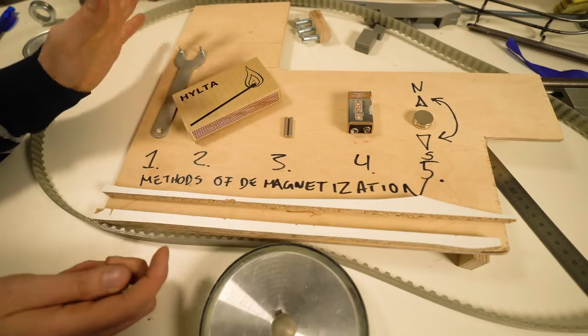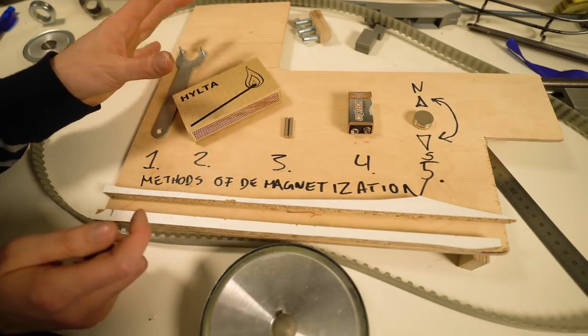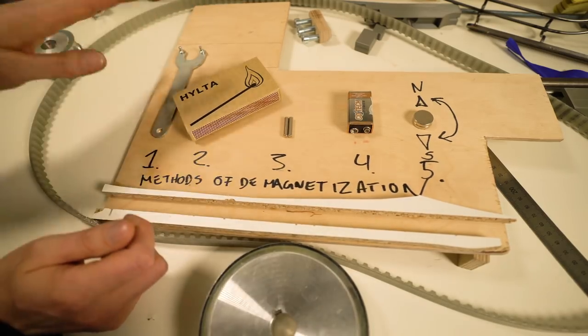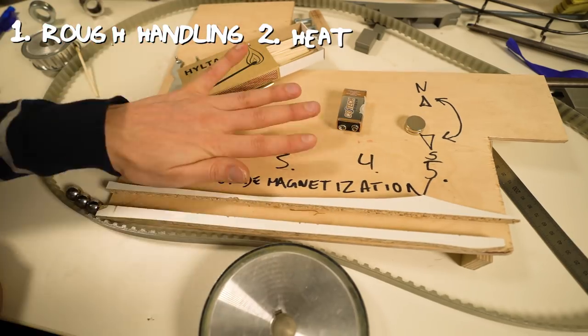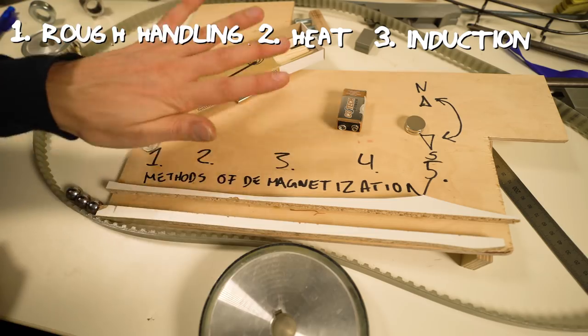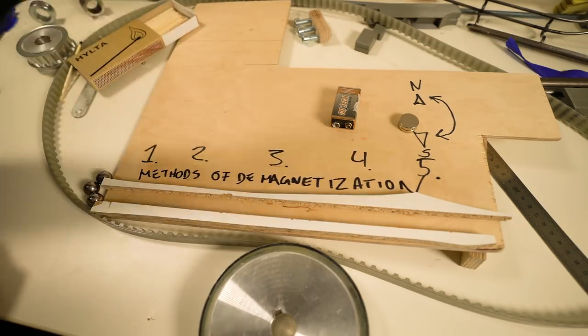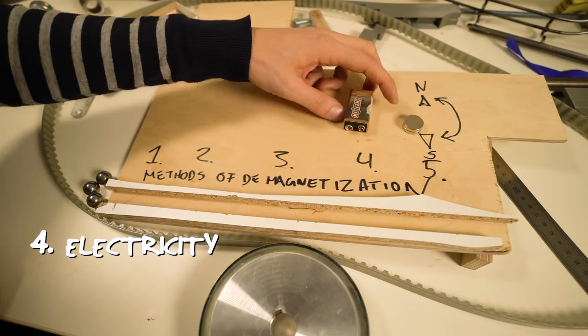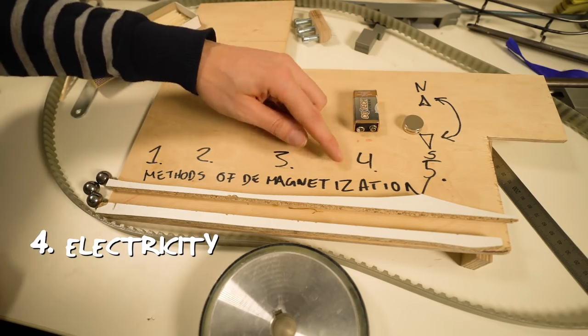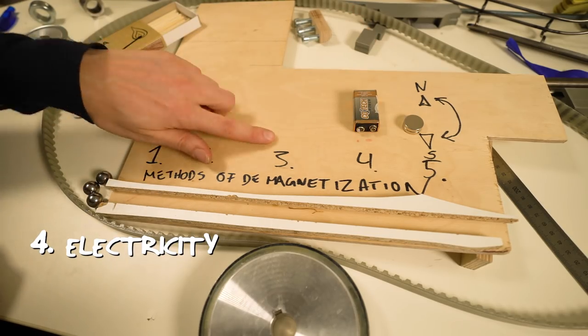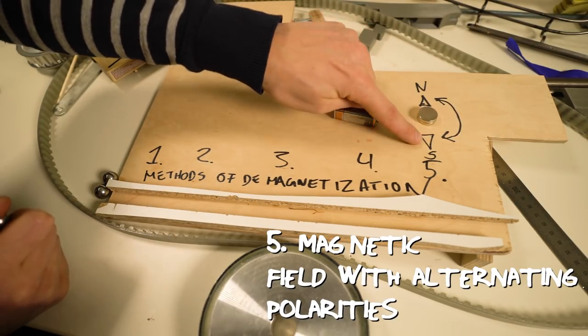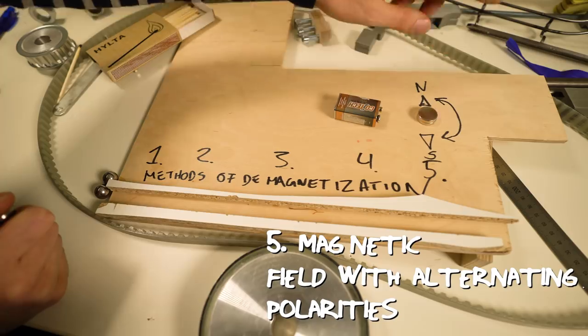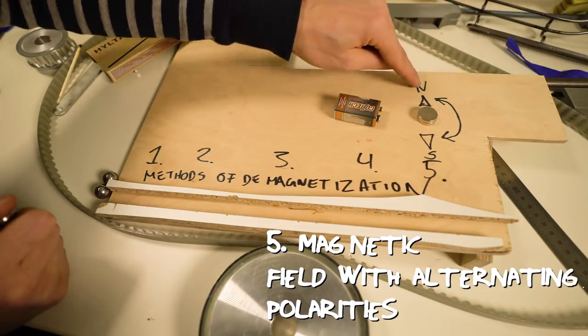I started by looking at different methods of demagnetization. You can demagnetize something by using brute force or by using heat or by using induction. None of these three methods are practical on the Marble Machine X. The fourth method is electricity. And I don't want to implement electricity into the machine because of aesthetical reasons. So I went with method number five to create a magnetic field with alternating polarities. Because this we can try to do mechanically.